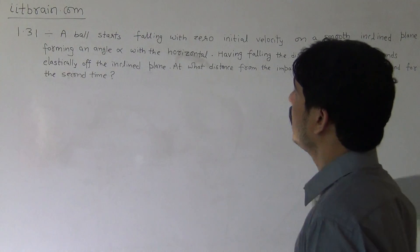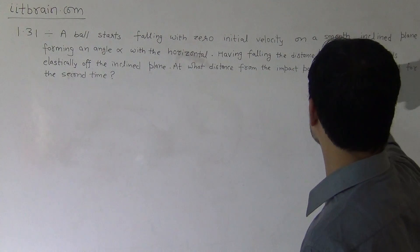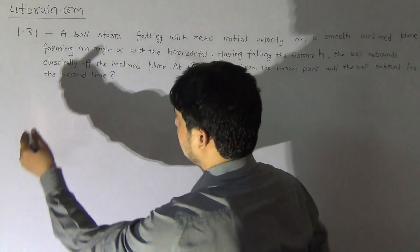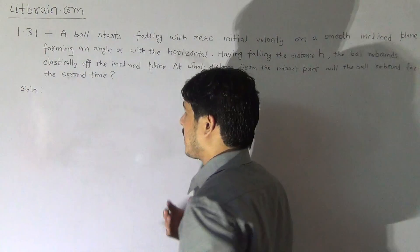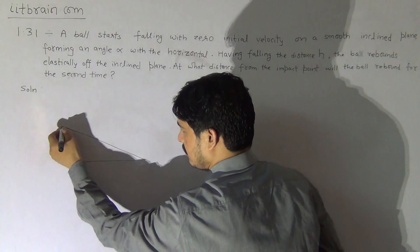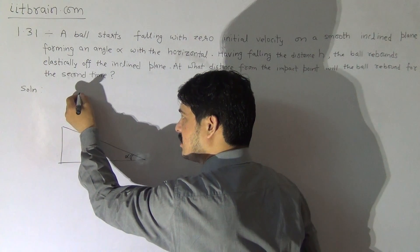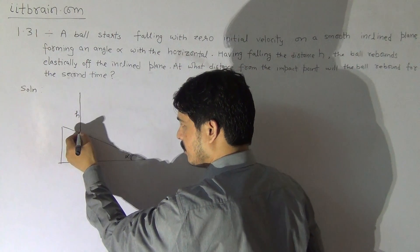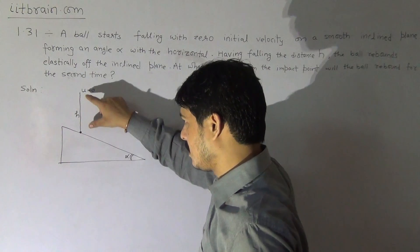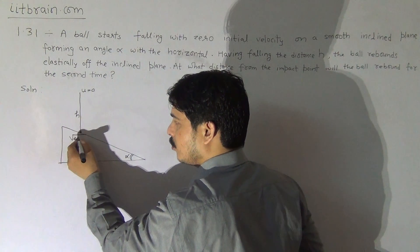This is problem 1.31: a ball starts falling with zero initial velocity on a smooth inclined plane forming angle alpha with the horizontal. Having fallen the distance h, the ball rebounds elastically off the inclined plane. The velocity at the time of impact will be root 2gh, given by Galileo's equation v² = u² + 2gh.